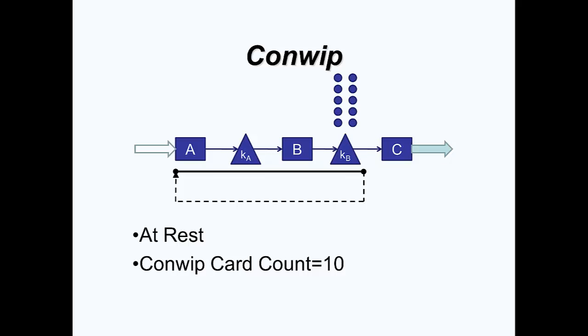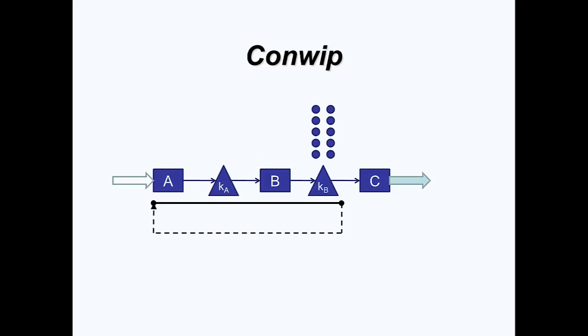Here I demonstrate a ConWhip system with two work centers and a card count of 10. The system starts at rest, with 10 finished jobs, each holding a card, sitting in finished goods inventory at KB. Action starts when product is consumed or pulled at C. This frees a card, which travels back to the entry point of the system, allowing a new job to start its progress through the system, through work centers A and B. And then when this new job is complete, it joins the inventory at KB, and the system returns to its resting state.